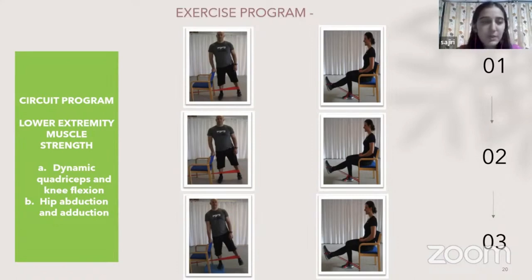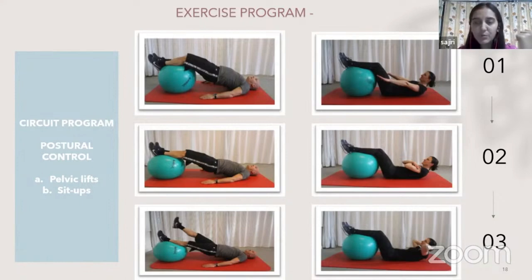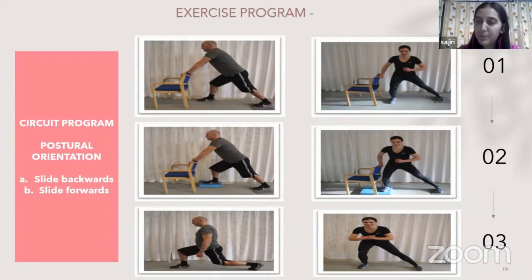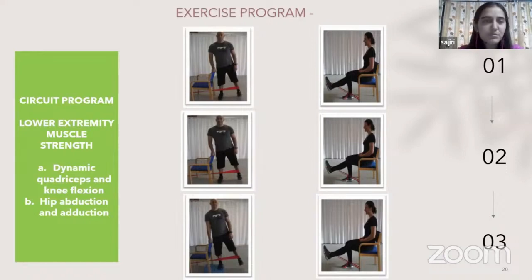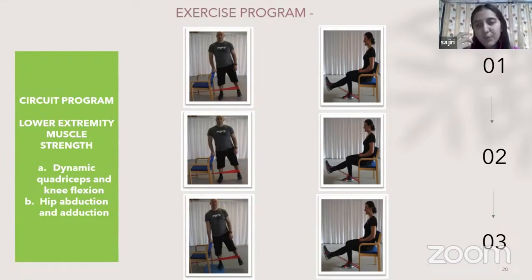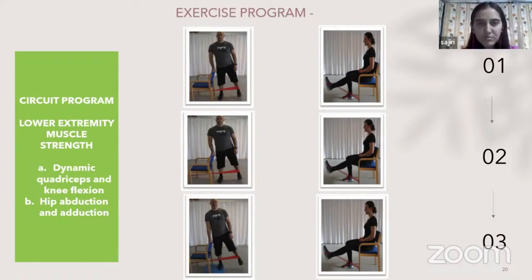The third category is lower extremity muscle strength. In postural control we targeted coordination; in postural orientation we targeted proprioception and balance; here we target muscle strength. We work on strengthening the quadriceps musculature, hamstrings through knee flexion or knee curls, and hip abduction and adduction. Progression involves placing a resistance band from proximal to distal or changing the resistance level while maintaining the band placement across all three levels.